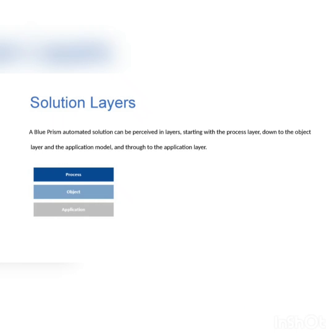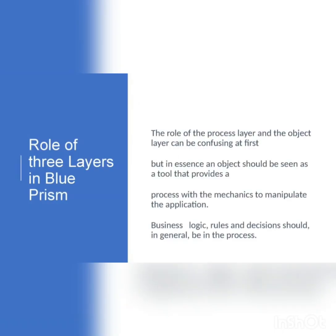The third level is partial fragment automation. In this type, automation happens in fragments — one process is automated, the next process is manual, and then the next one is automated again. So automation alternates with manual steps throughout the workflow.